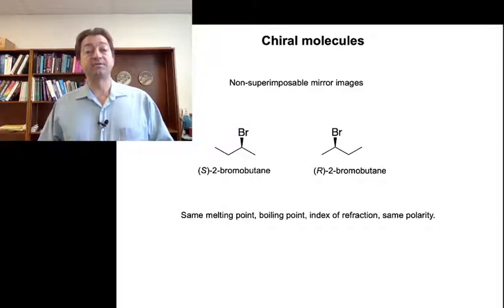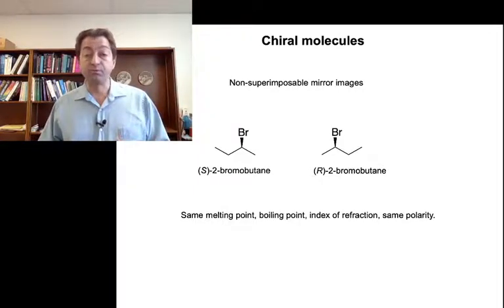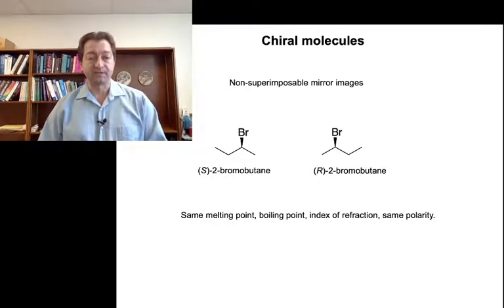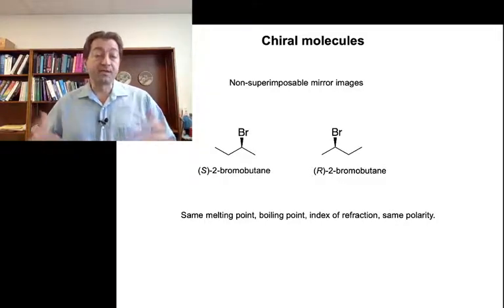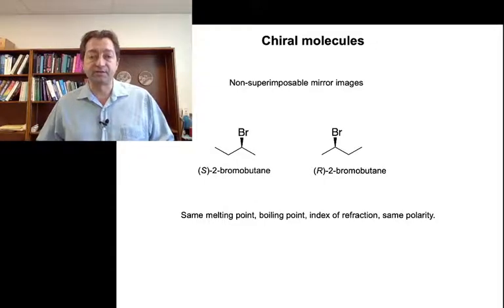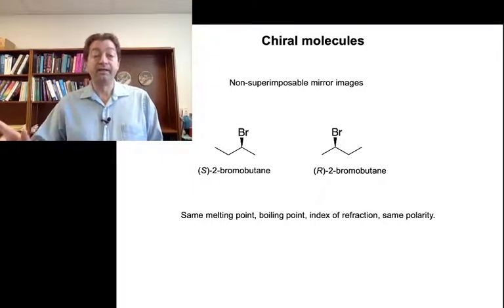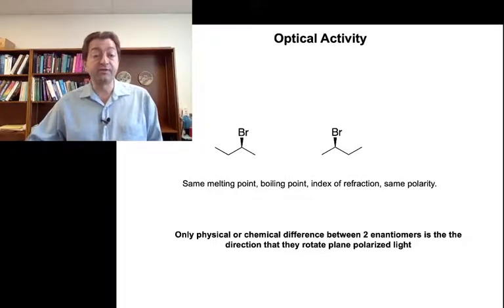We looked at the example of R and S 2-bromobutane — non-superimposable mirror images. When we introduced these molecules we said they've got the same physical and chemical characteristics. The enantiomers are identical with respect to each other in terms of boiling point, melting point, index of refraction, and polarity. That means you can't separate or distinguish the enantiomers based on melting point; you can't separate them by distillation, and you can't even separate them by chromatography. Their properties are all identical. However, there is one physical property that is different between the two enantiomers.